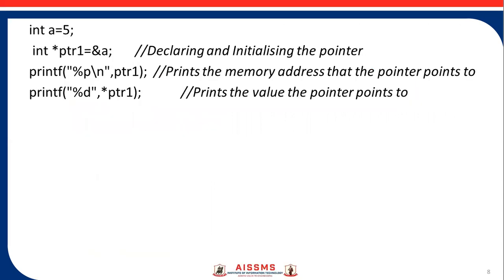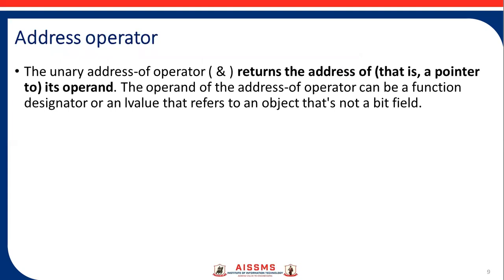For example, int a = 5, int* ptr1 = &a. Then, print the memory address that the pointer points to. Then next, print %d with *ptr1 - this prints the value that the pointer points to.